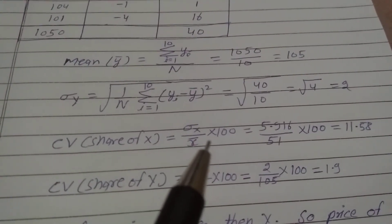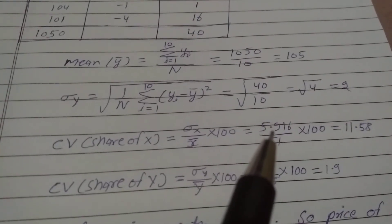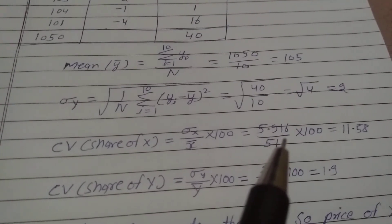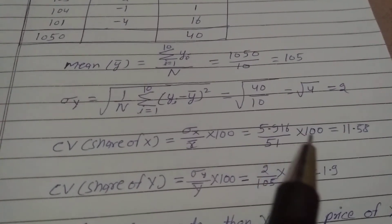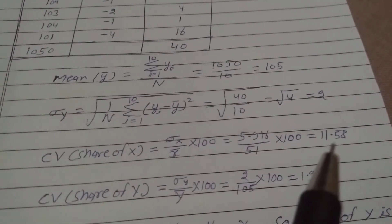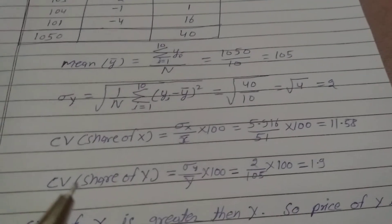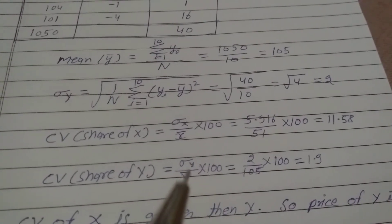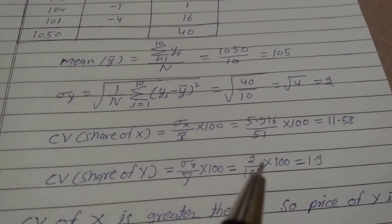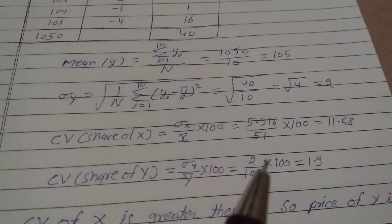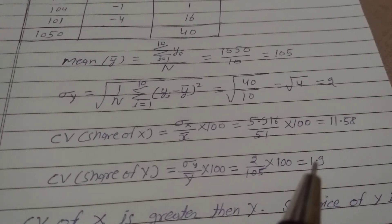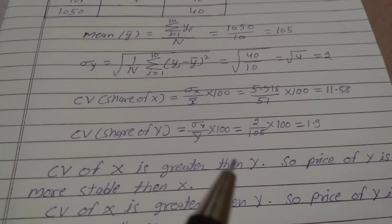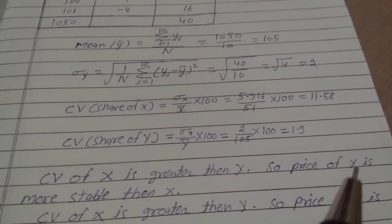Coefficient of Variation (CV) of share X equals sigma X upon X-bar into 100. Sigma X is 5.916, X-bar is 51, so CV of X equals 5.916 upon 51 into 100, which equals 11.5. CV of share Y equals sigma Y upon Y-bar into 100, equals 2 upon 105 into 100, which equals 1.9.